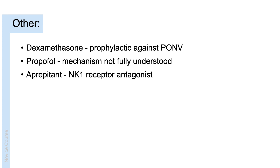Some other drugs that are commonly used in the prevention and treatment of post-operative nausea and vomiting include the steroid dexamethasone, which has been shown to be preventative when given at induction of general anaesthesia; propofol, which further advocates the use of TIVA potentially in patients who have a really significant history of post-operative nausea and vomiting; and aprepitant, which is an NK1 receptor antagonist. The NK1 receptor is another receptor found on the chemoreceptor trigger zone, and through antagonism of this receptor is how aprepitant and other NK1 receptor antagonists exert their antiemetic effect.